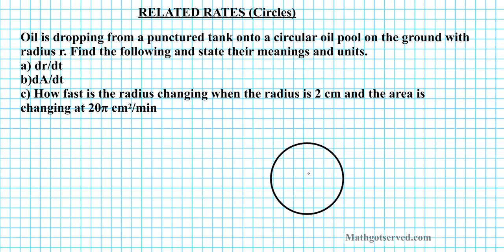So let's say this is your pool. As oil drops on the pool, what happens to the pool? The pool gets bigger. So as indicated in the problem, the radius of the pool is r. Now we have to find dr/dt and dA/dt. If we think about a circle, what formula relates the radius and the area? The formula is A equals pi r squared. We learned this formula in geometry.